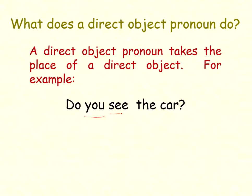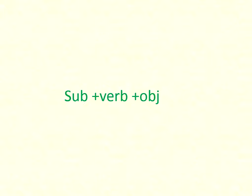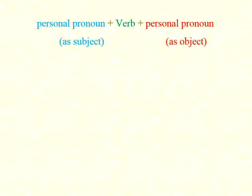For example, 'Do you see the car?' Here we have subject, verb, and object. 'She mentioned it' — now 'it' takes the place of the direct object as an object pronoun. 'Yes, I see it' — subject, verb, object pronoun. That object pronoun has taken the place of 'the car.' The sentence format is: subject plus verb plus object.